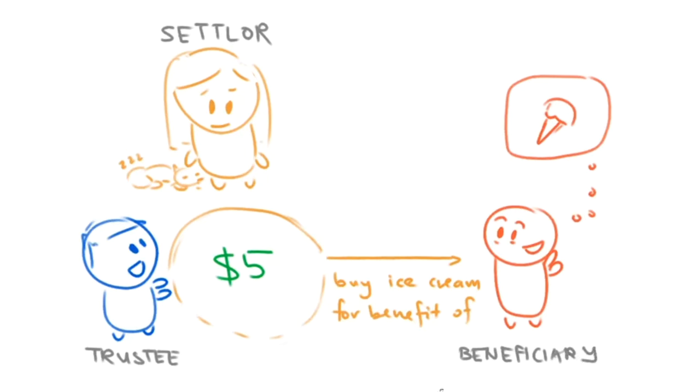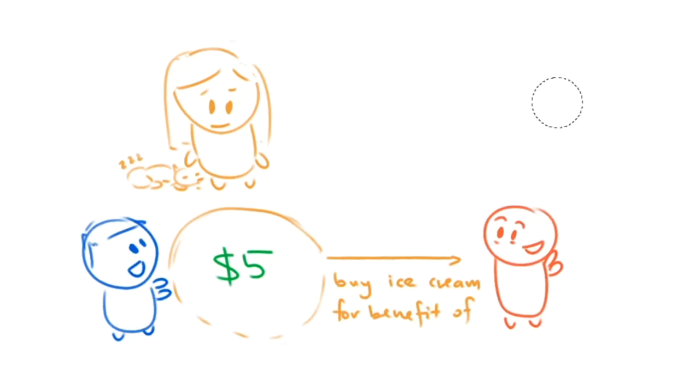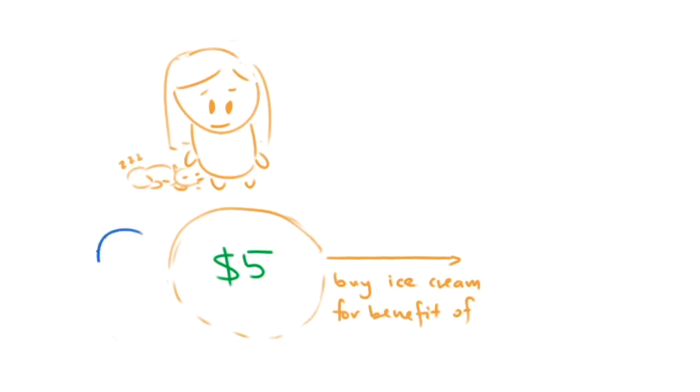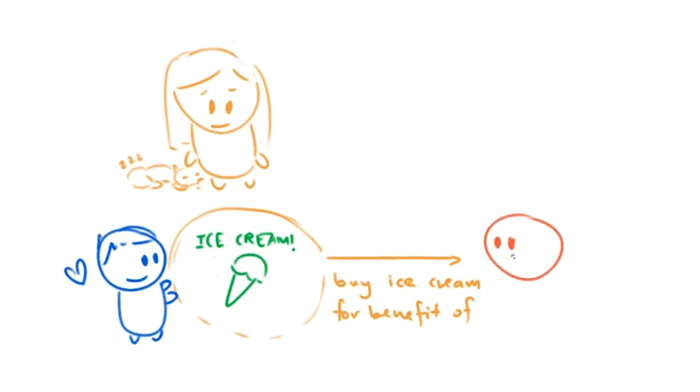Got it? That's great. Now let's explore the trust idea a little bit. Let's say I take Professor Miao's $5, and I faithfully use it to buy the ice cream for you. But on the way to your place, the ice cream disappears because I accidentally ate it.